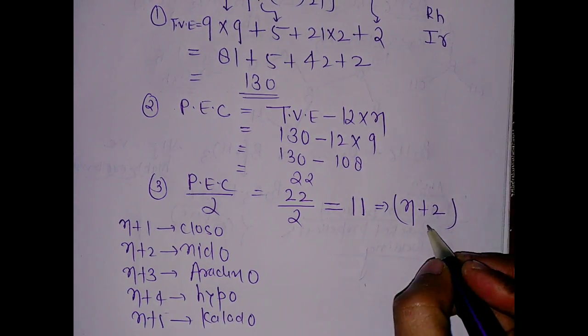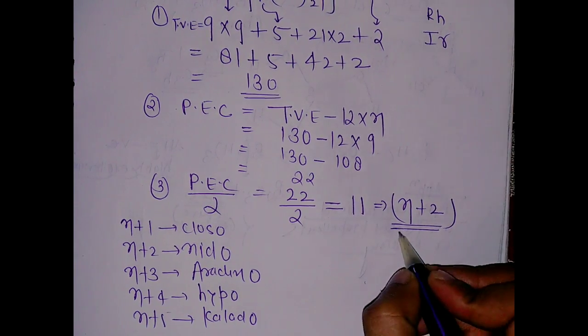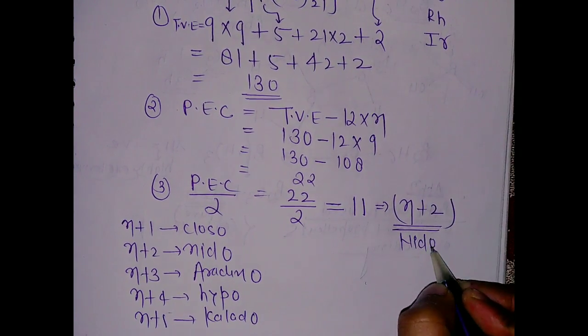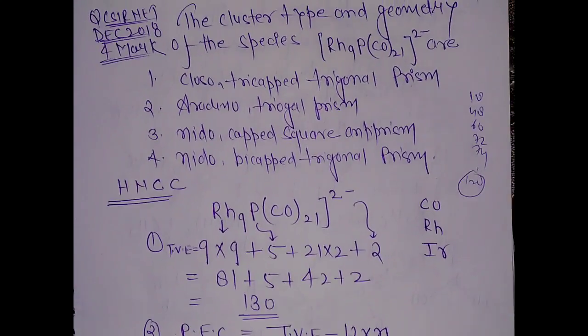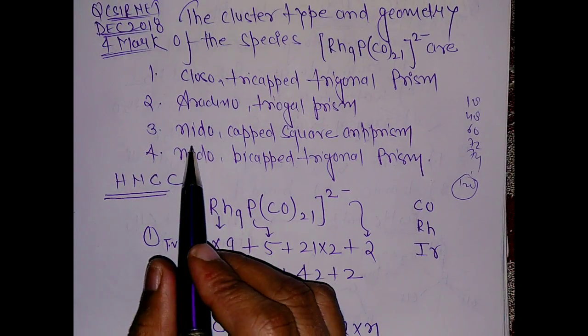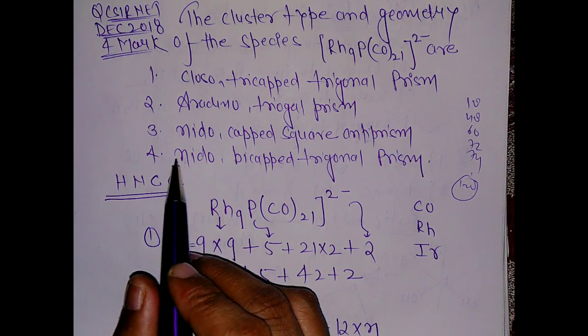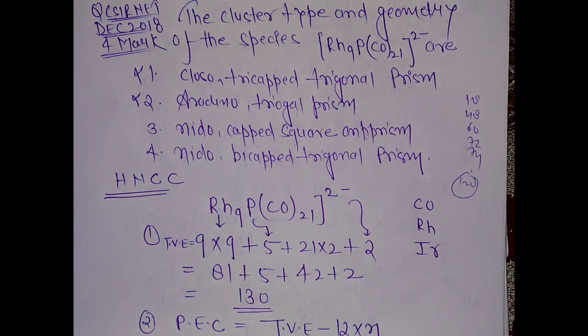And if we have n+4, this is hypo. If we have n+5, we have clado. So this is nothing but your nido structure.